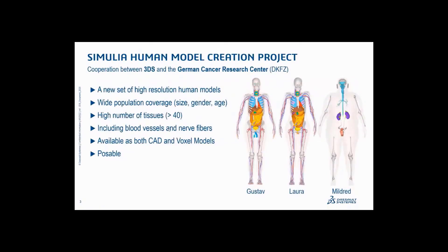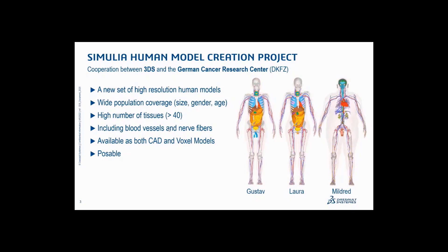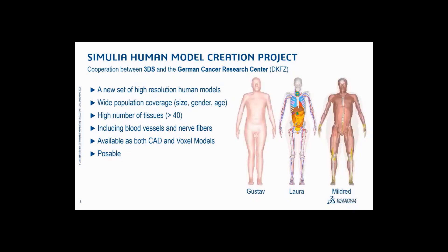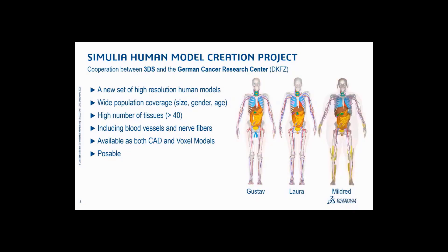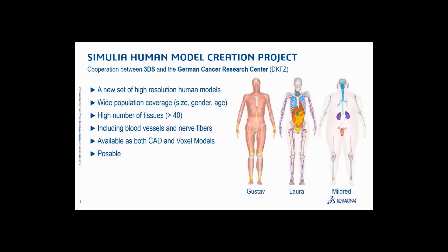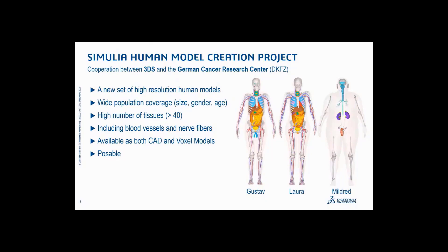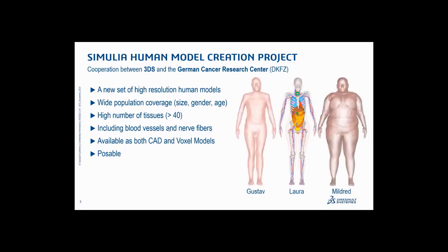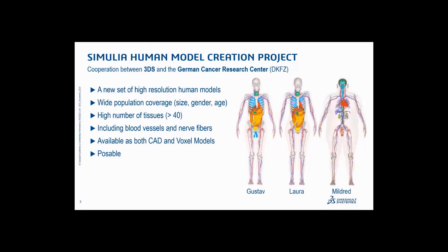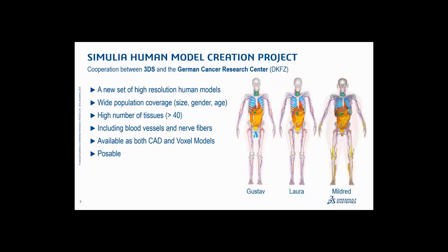Let's have a look into the Simulia human model creation project. This is a cooperation between Dassault Systèmes and the German Cancer Research Center, the DKFZ. The idea was that we saw quite some need to have more detailed human models to be used in all kinds of electromagnetic simulations. There were some models available — we do have a CST voxel family, which you may know from the past couple of years — but the goal was to start with a completely new set of high-resolution models.